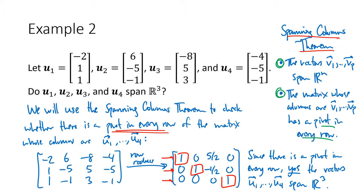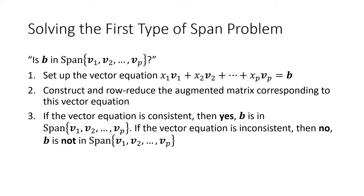Always write a conclusion and be unequivocal about your answer. Don't just row reduce a matrix — explain what the matrix represents, why you're row reducing it, and then once you have the result, explain what the pivot positions tell you and connect that back to the original question.